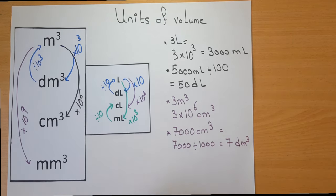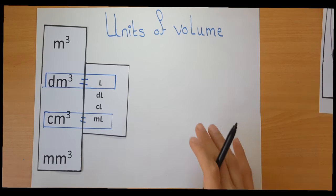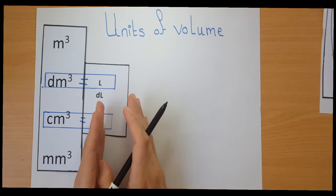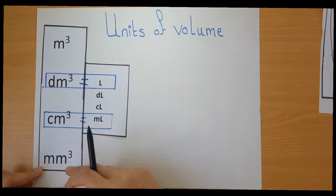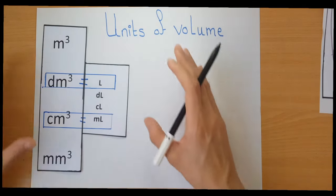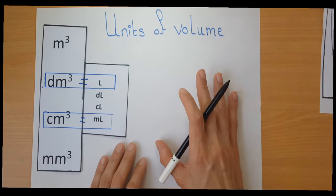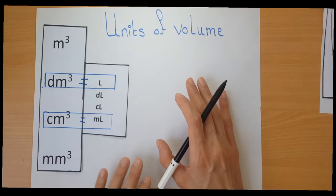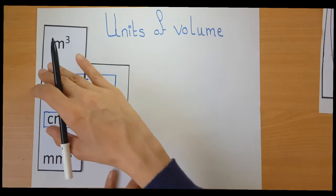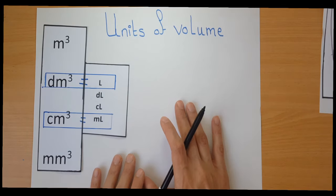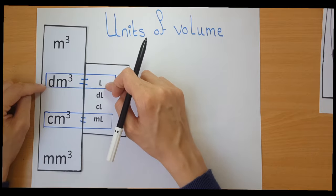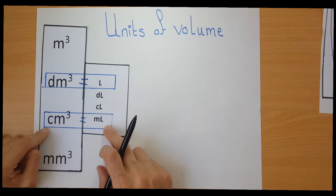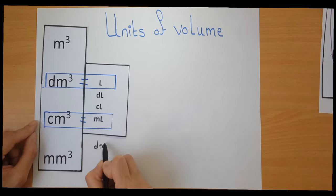Now, how can we convert from the liter-based units to the cubic meter-based units, or vice versa? All of these are units of volume — units of the same quantity — so we can express any one of them in terms of the other. We have this key equality: the cubic decimetre equals the liter, and the centimetre cube equals the millilitre. So: decimetre cube equals litre, and centimetre cube equals millilitre.